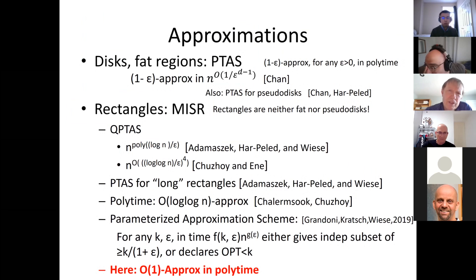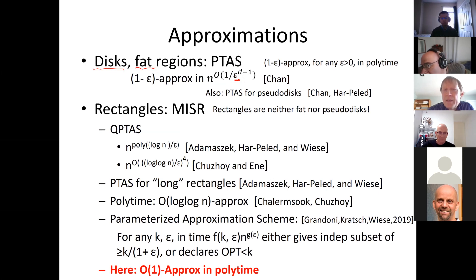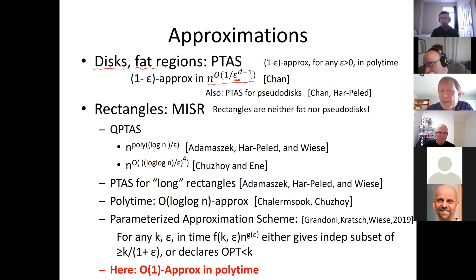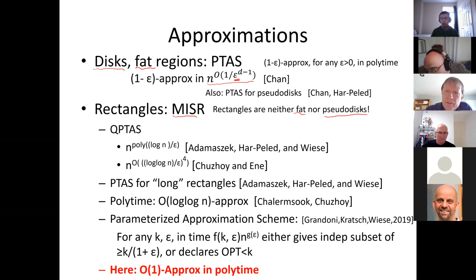Since the problem is hard, we're interested in approximations. For disks or more generally fat regions, you can achieve a PTAS — you can get arbitrarily close to 1, though running time depends on epsilon. Timothy has worked on this, as have others. There are also PTASs for the special case of pseudodiscs. But rectangles are neither fat nor pseudodisc, so they require different techniques.